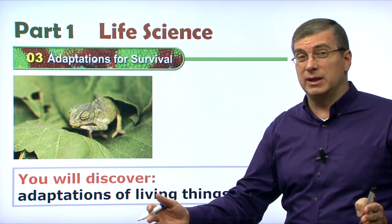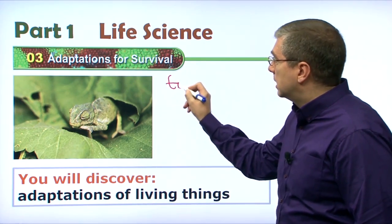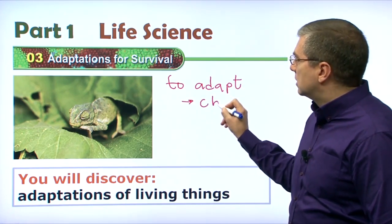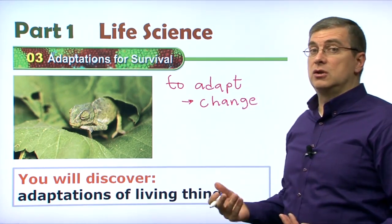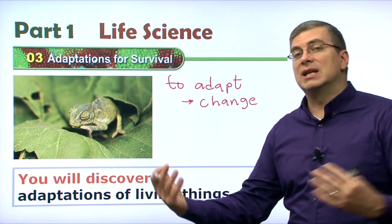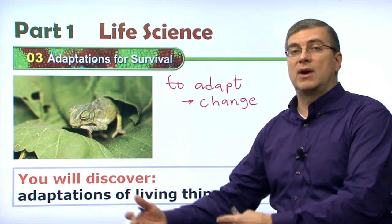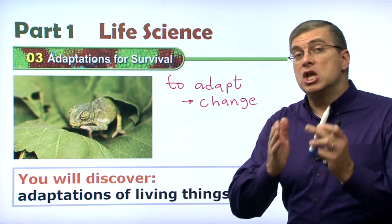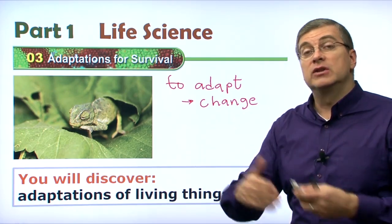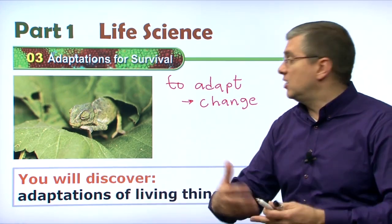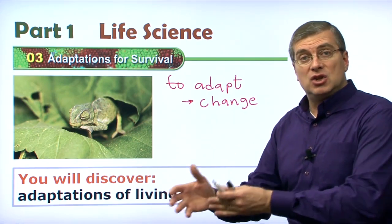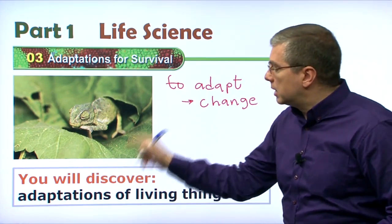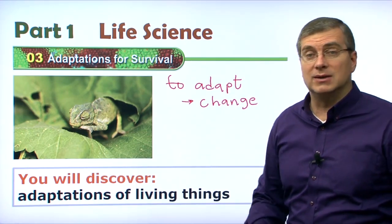Adaptations is a long word, isn't it? It comes from the verb to adapt. What does to adapt mean? To adapt means to change. Animals change. We change too. If our environment, our surroundings, change, we have to change with our environment. Think about this: if you move to a new country, you have to learn a new language and a new culture. You have to adapt — you have to change to the new environment. So adaptations are changes that living things make when they change environment, or when they want to survive in their environment, because the environment is always changing. Let's take a look at how living things change according to their environment — and that is adaptation.